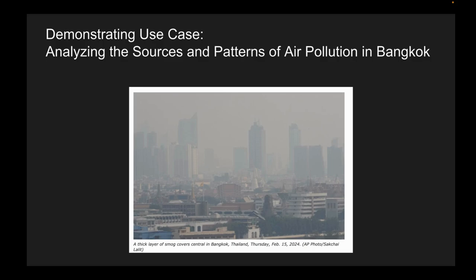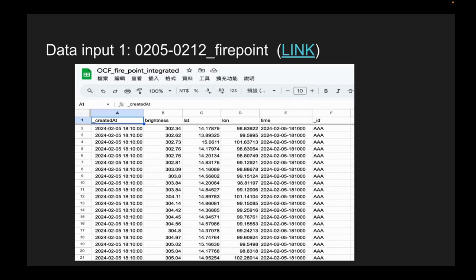In this case, we want to analyze the sources and patterns of air pollution in Bangkok. As we know, Bangkok really does have a thick layer of smoke — this kind of air pollution issue. On this platform, we can integrate data from IoT sensors and satellite imagery. This is one dataset example: the fire point data captured from satellite.